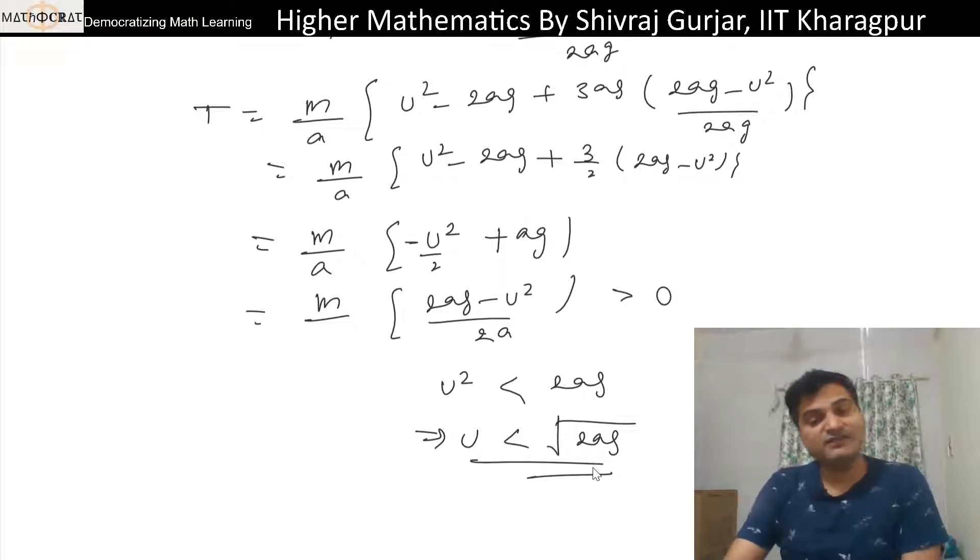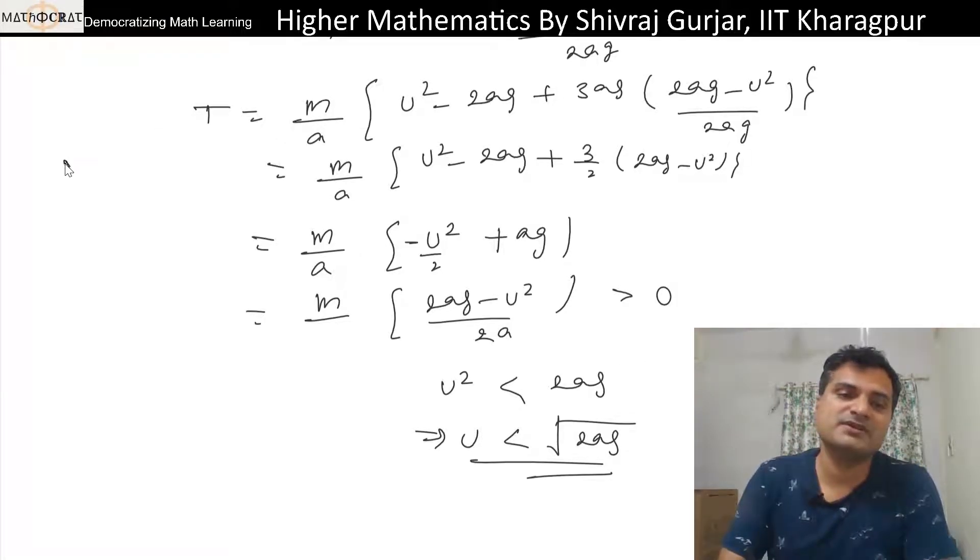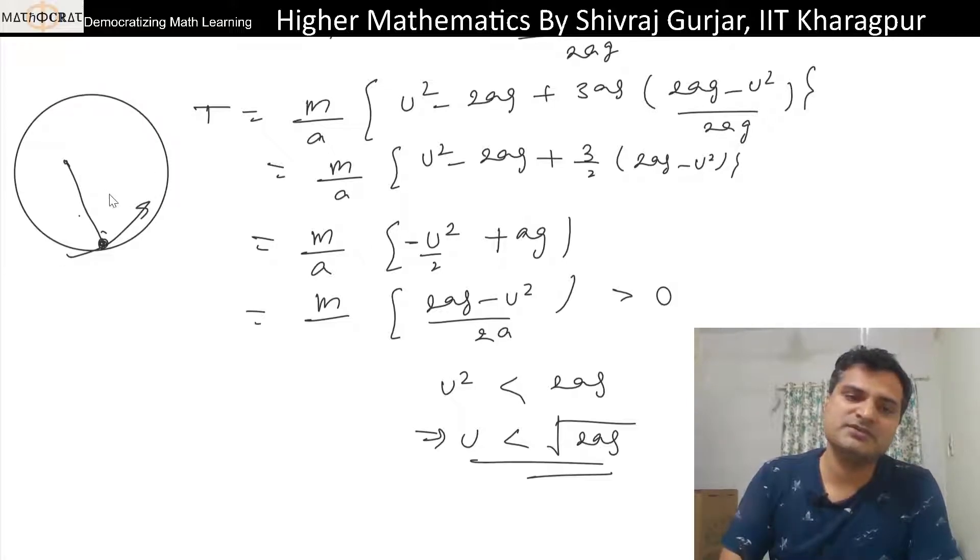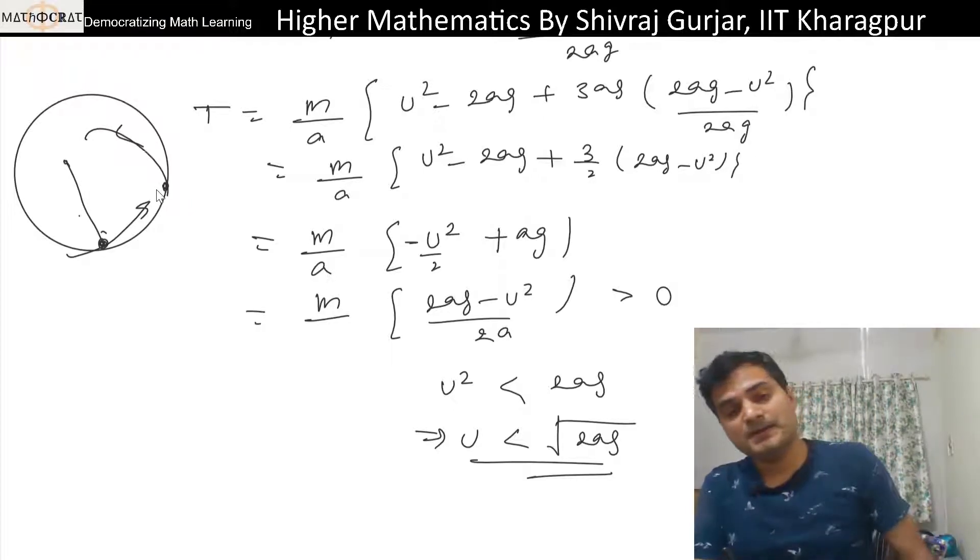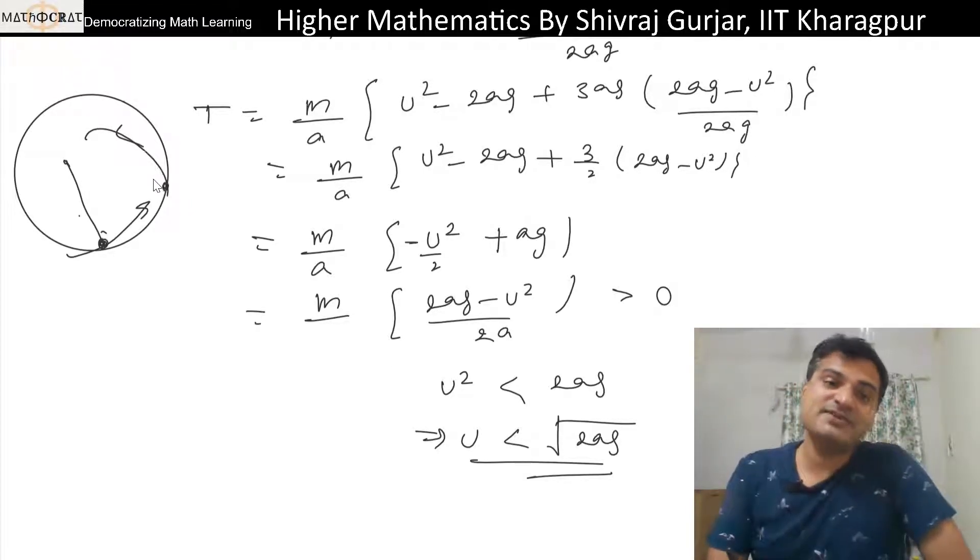So first case that velocity is 0 before tension becomes 0. Tension 0 का मतलब यह है कि यह जो inextensible string है जिससे particle attach है, अगर tension 0 होगी तो यह slack हो जाएगी. तो यह सर्कुलर path में नहीं रहेगा, यह अंदर चला जाएगा because the string has become slack due to tension being 0.